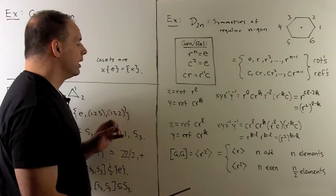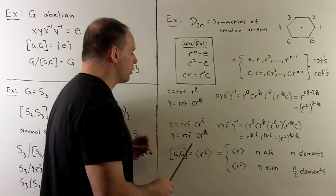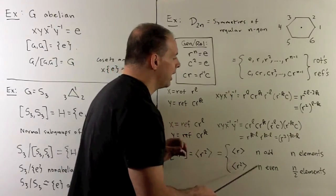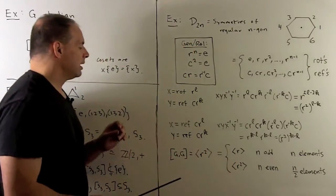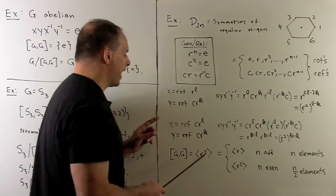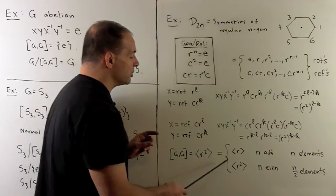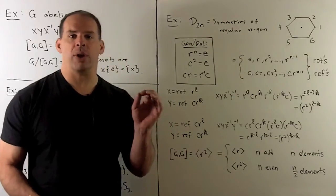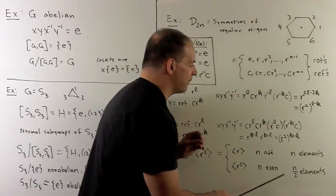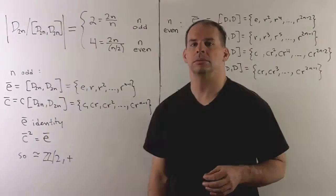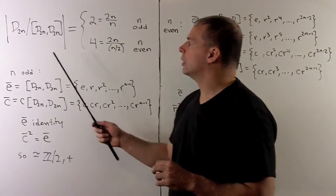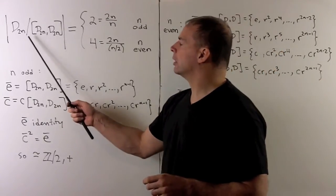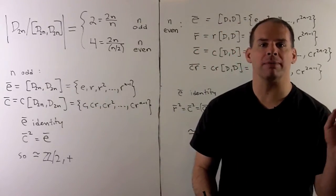Two things can happen. If n is odd, the subgroup generated by r squared is all rotations — the subgroup generated by r — which has n elements. If n is even, the subgroup generated by r squared gives us r squared, r fourth, r sixth, and so on up to r to the 2n which is the identity, so this subgroup has n over 2 elements. For the order of the quotient groups, we divide the order of the group by the order of the commutator subgroup: when n is odd we get 2 elements; when n is even we get 4 elements.